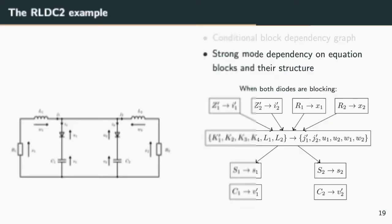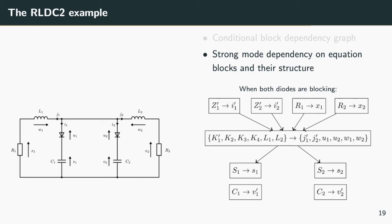When both diodes are blocking, the system has a different structure. The large block of six equations and six unknowns has to be evaluated in this mode. Remark that this time, it is equation k1 that appears differentiated.